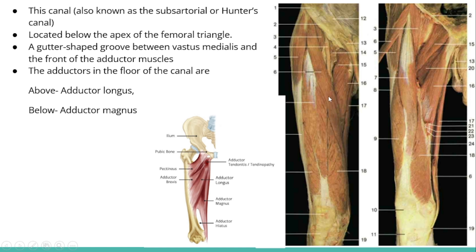So why is it called Hunter's canal? Because it was first described by the Scottish surgeon John Hunter in the context of treating popliteal aneurysm by ligating the femoral artery within this canal. So it has two other names: subsartorial canal or Hunter's canal.